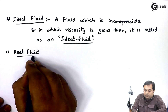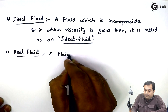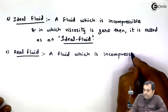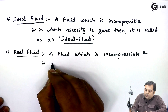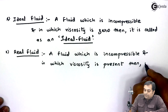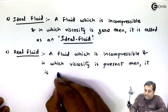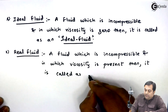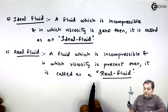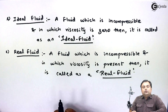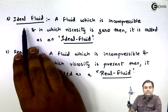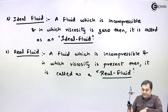Next, real fluid: a fluid which is incompressible and in which viscosity is present is called a real fluid. Fluids which have viscosity are called real fluids. In the universe, we come across mostly real fluids — ideal fluids are imaginary, while real fluids actually exist.